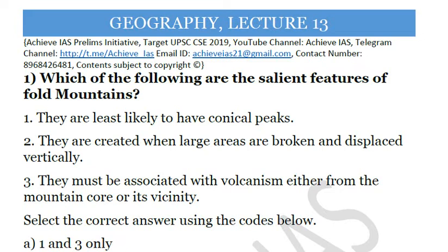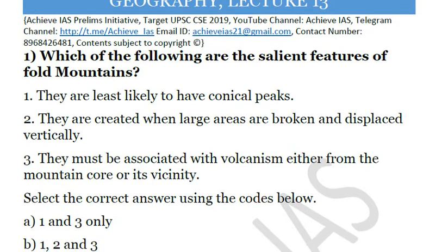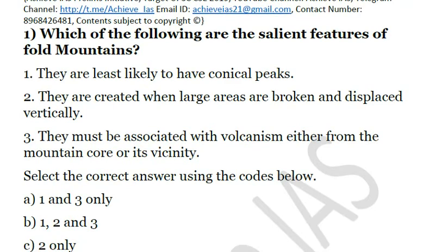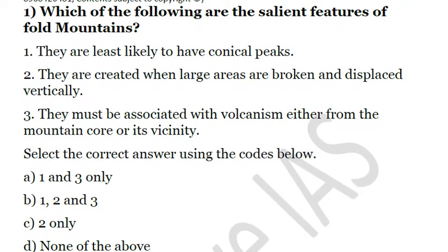Let's see the first question. Which of the following are the salient features of fold mountains? First, they are least likely to have conical peaks. Second, they are created when large areas are broken and displaced vertically. Third, they must be associated with volcanism either from the mountain core or in its vicinity. We have to choose which of the above statements is correct.